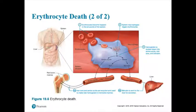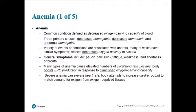To finish off red blood cells, we talk about when things go wrong. One major problem is anemia. If you're anemic, you have anemia. In anatomy, anemia is defined as a decreased oxygen-carrying capacity. When you have a decreased oxygen-carrying capacity, that is anemia. Your oxygen-carrying capacity is simply how much oxygen you could carry — if it's low, you're not carrying that much oxygen.